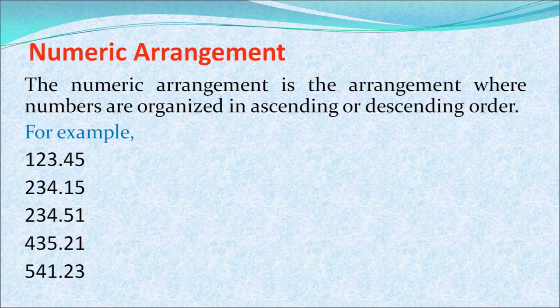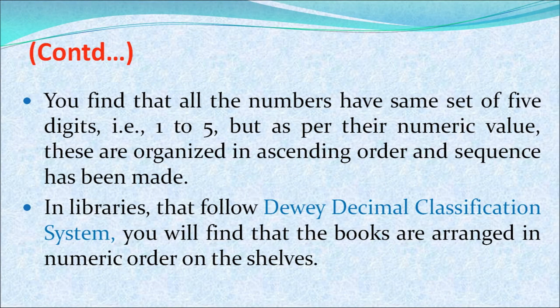Numeric arrangement is the arrangement where numbers are organized in ascending or descending order. For example, 123.45, 234.15, 234.51, 435.21, and 541 are arranged in ascending order from 100 up to 500. As per their numeric value, these are organized in a sequence. In libraries that follow the Dewey Decimal Classification system, books are arranged in numeric order on the shelf, which is the order followed in most libraries.